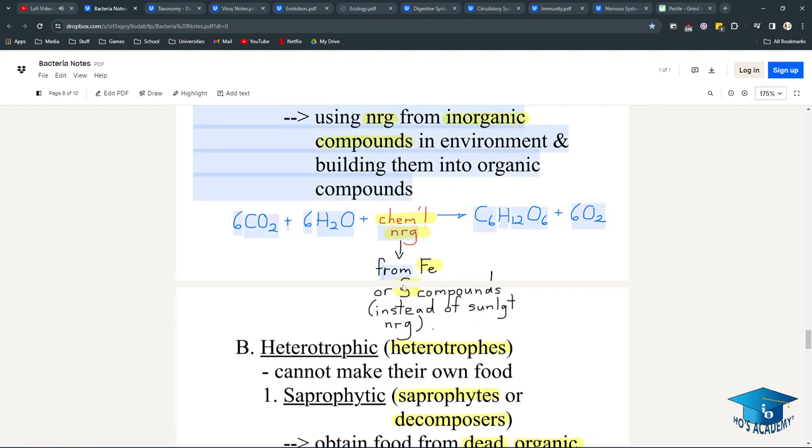The equation is 6CO2 plus 6H2O plus chemical energy, for example iron or sulfur compounds instead of sunlight energy as seen in plants, and then they can transform it into glucose and oxygen because they just need to break the bonds in carbon dioxide and water and form glucose as food.